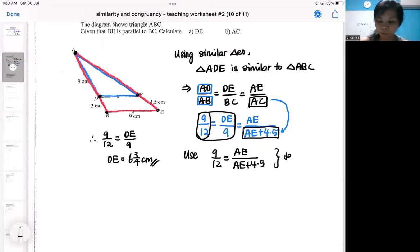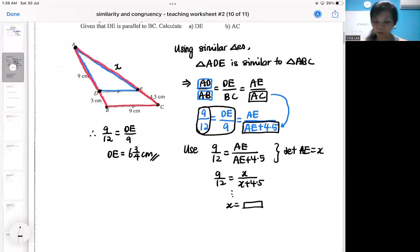Or if you feel more comfortable, you can let AE be X. So that's what some people will do. They find it more comfortable looking at X. So if that's you, that's fine. Then continue to solve for X. But that's not the answer. Your answer is AC. AC is X plus 4.5.